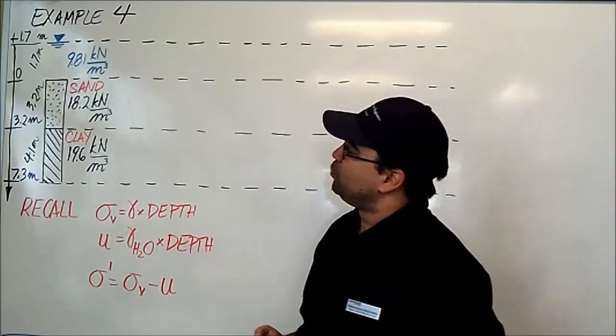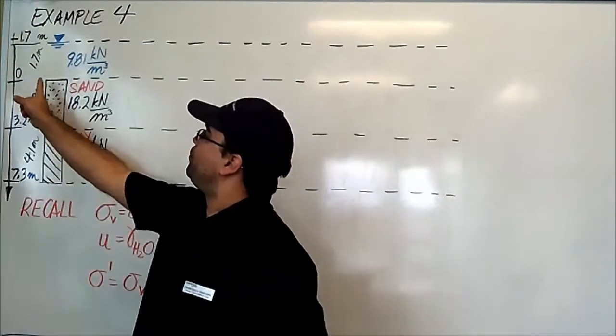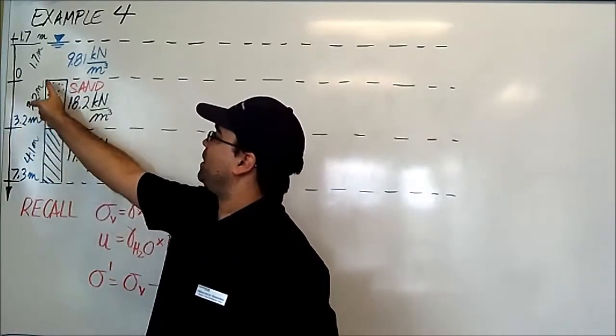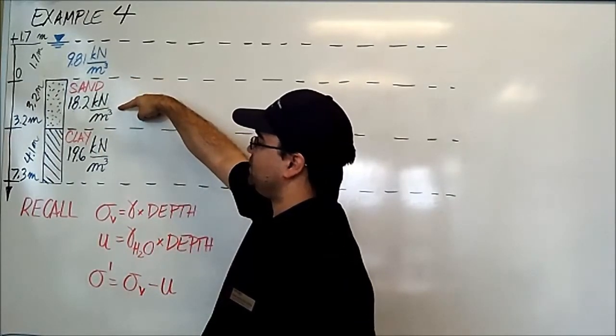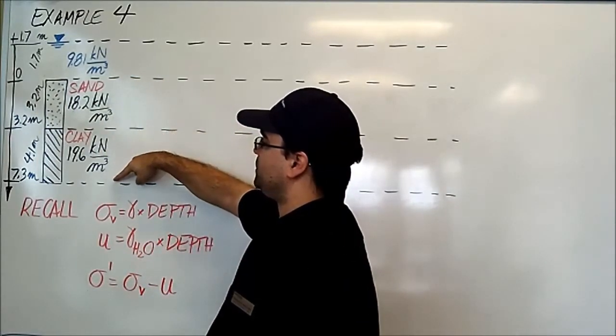So a quick review: we have 1.7 meters worth of water above the surface, then we have 3.2 meters worth of sand with this density, and 4.1 meters worth of clay with this density.